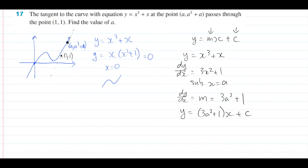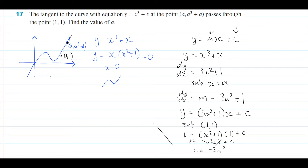Now the goal is to find c. We can sub in the point (1, 1): 1 equals (3a squared plus 1) times 1 plus c, which gives 1 equals 3a squared plus 1 plus c. The 1s cancel each other out, and moving 3a squared to the other side gives c equals negative 3a squared. So now that we've found c, we can rewrite the tangent equation as y equals (3a squared plus 1)x minus 3a squared.